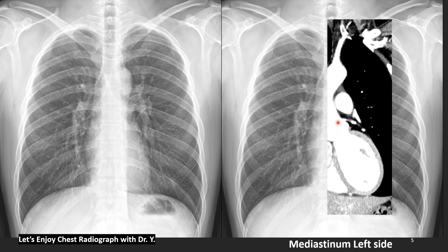This is a contrast-enhanced chest CT coronal image. We are looking at the left margin of the mediastinum. This is the left subclavian artery. This is the aortic arch, which can also be called the first mogul — 'mogul' meaning a small mound of snow. This is the pulmonary trunk, also named the second mogul.